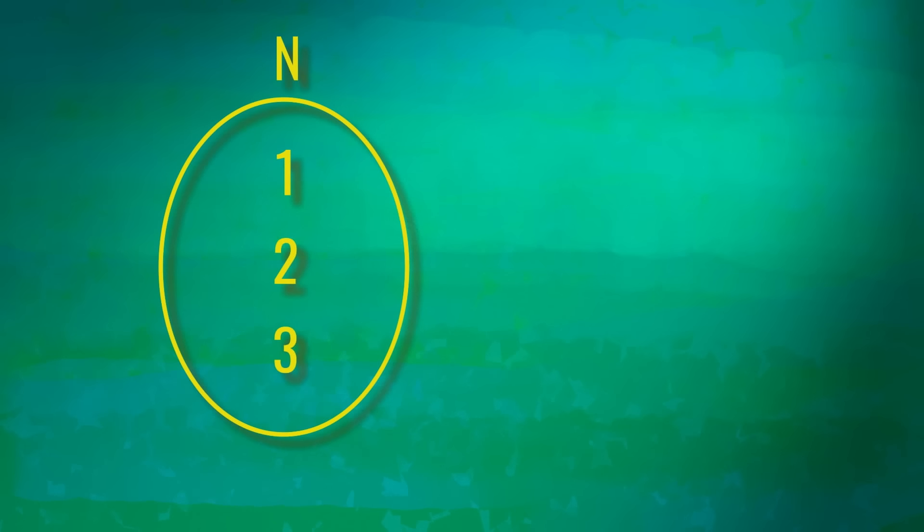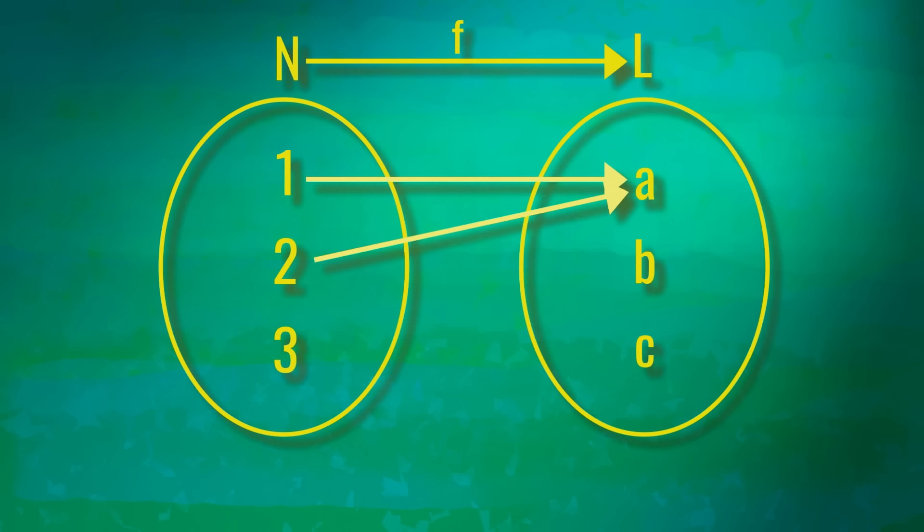For example, consider a group of numbers and a group of letters. We could define a function where every numerical input corresponds to the same alphabetical output, but this doesn't establish a particularly interesting relationship.